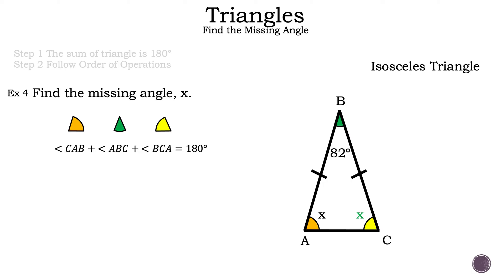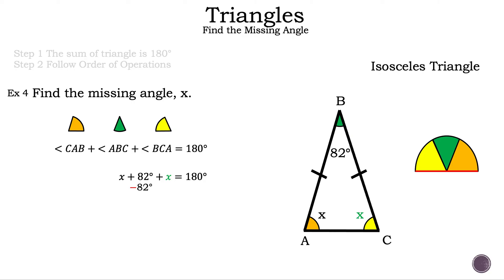We know that the sum of a triangle is 180 degrees. So we can write down the orange angle, or angle CAB, plus the green angle, or angle ABC, plus the yellow angle, or angle BCA, is equal to 180 degrees. Another way of thinking about it is when we put all the angles together, it forms a half circle, which is also 180 degrees. Let's substitute what we know: X for the orange angle, plus 82 degrees for the green angle, plus X for the yellow angle, equals 180 degrees. Let's move that plus 82 degrees to the other side — the inverse of plus is subtraction — so we subtract 82 degrees on the left-hand side. Those numbers cancel. Now we subtract 180 degrees minus 82 degrees, and the result is 98 degrees.